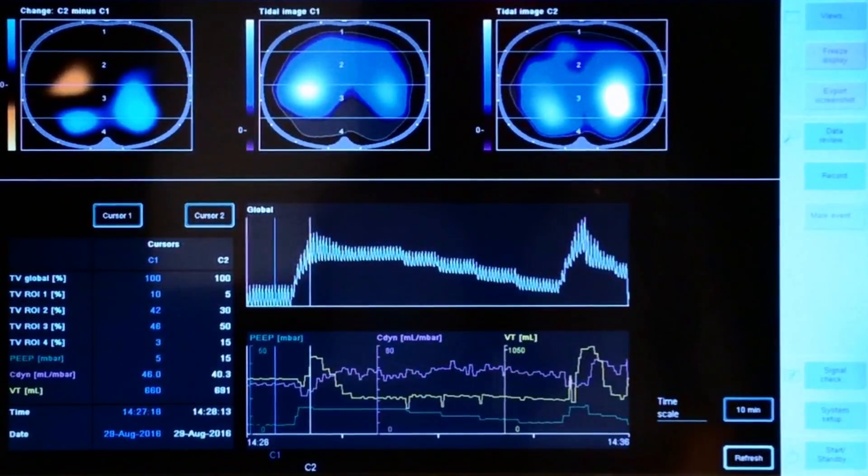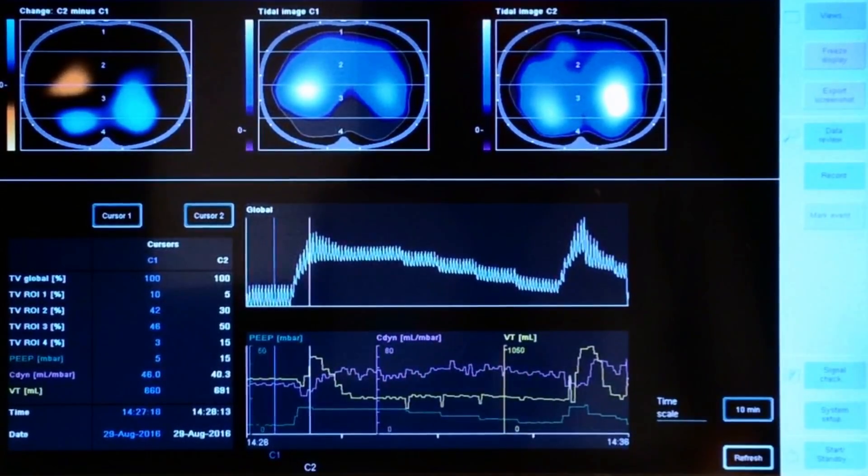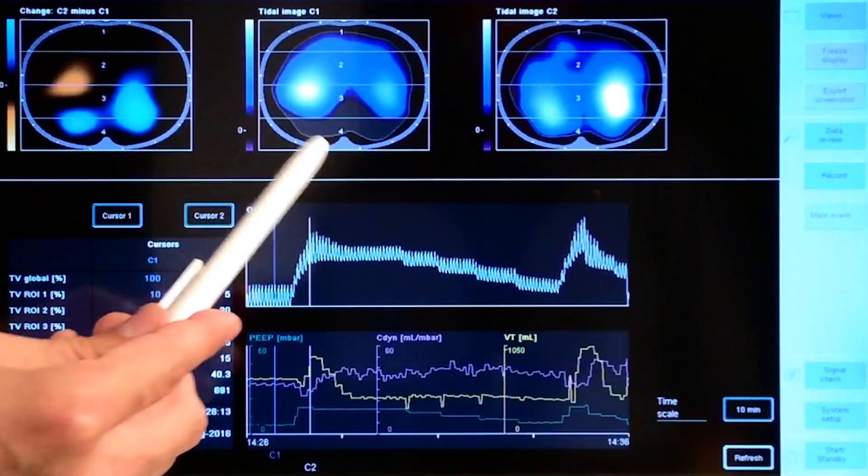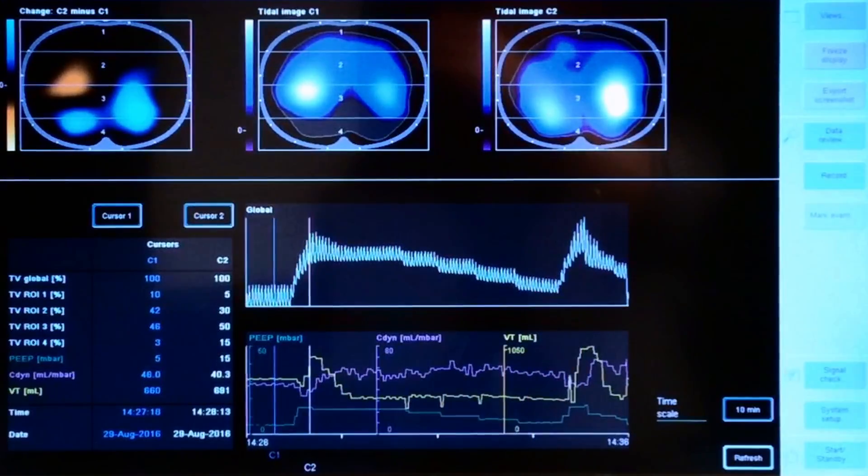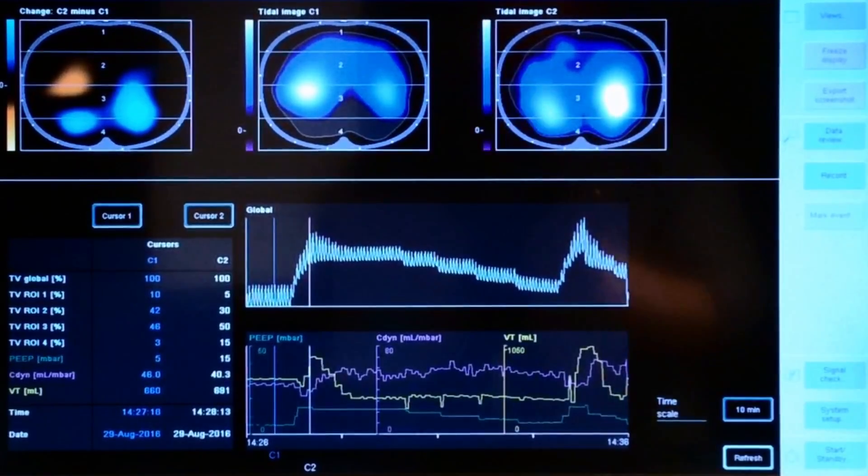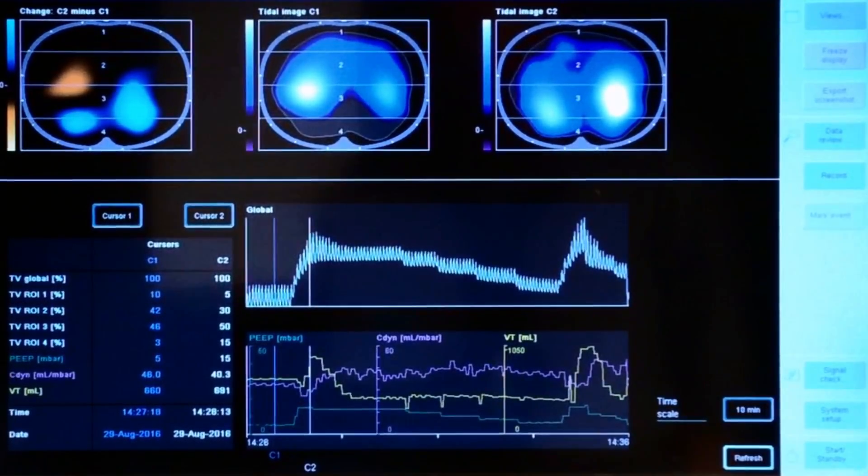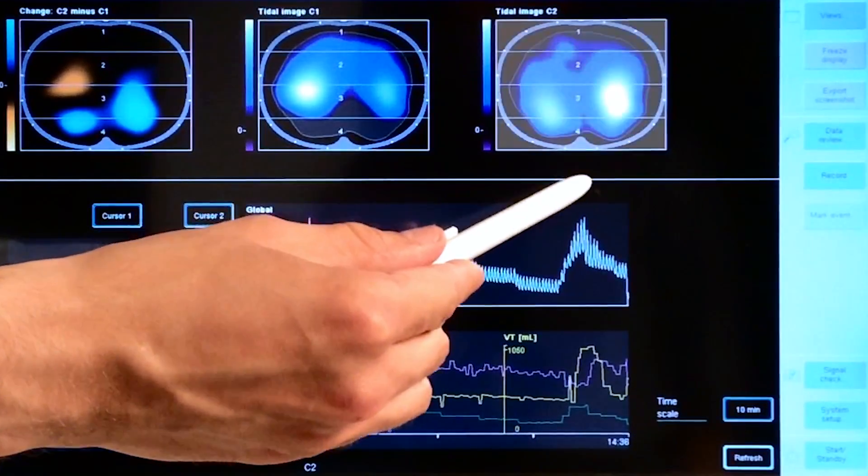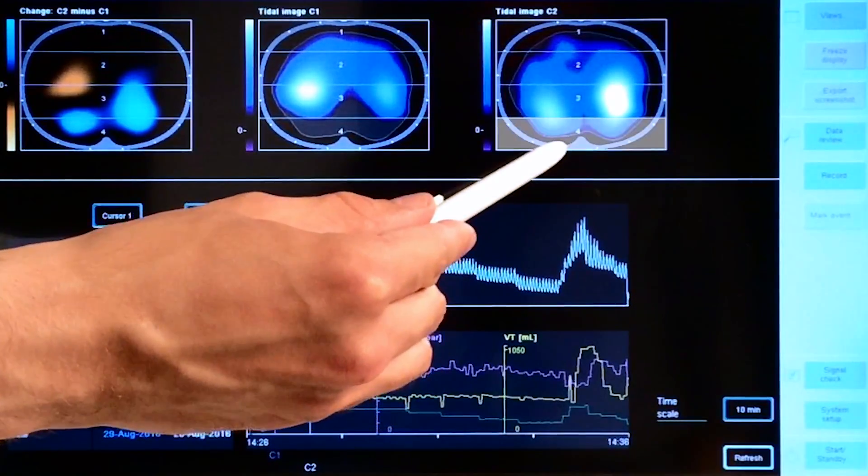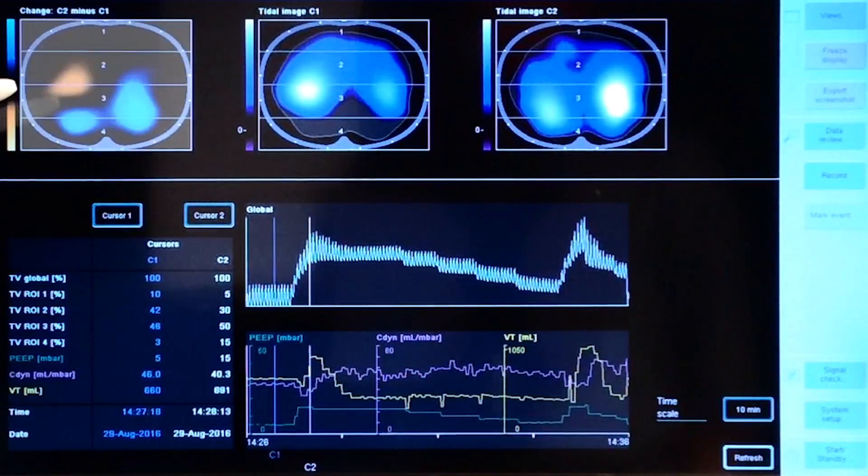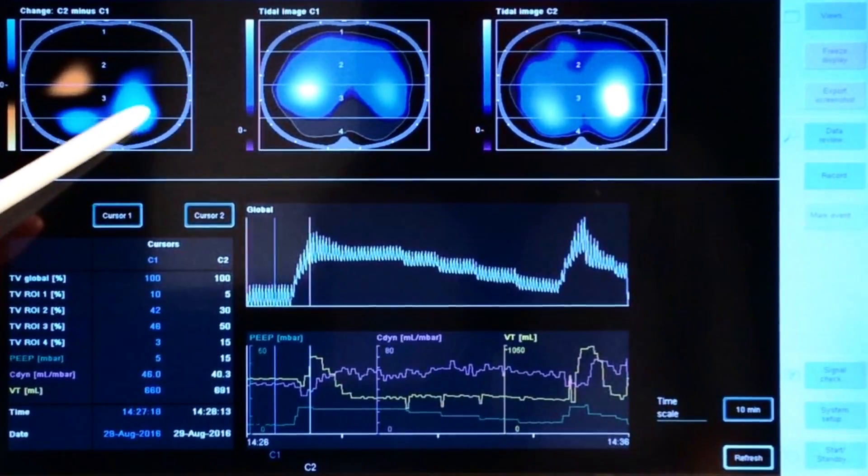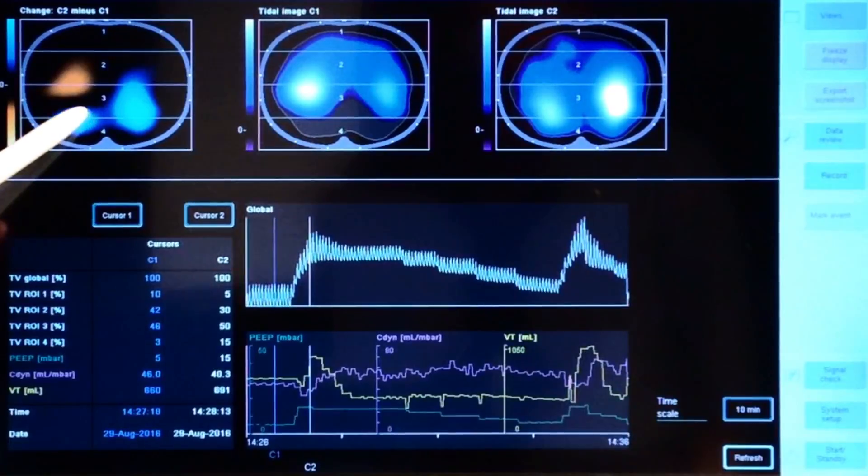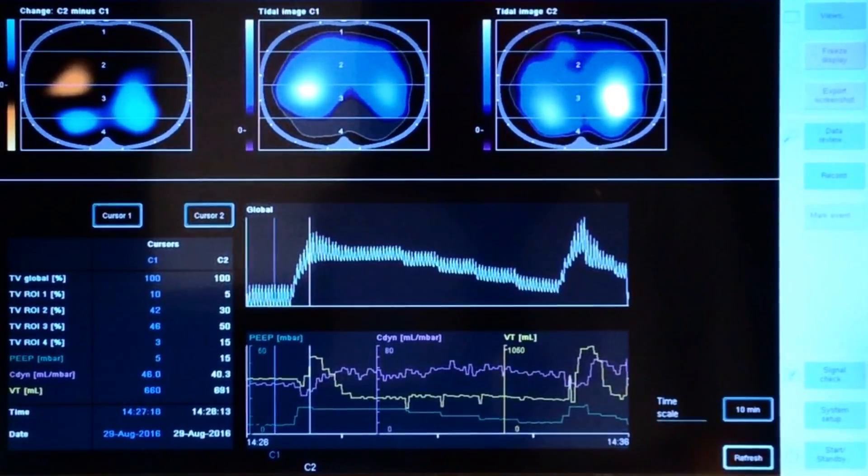When we compare the regional information before and during the recruitment maneuver, we see a significant change in the images. The title image now shows ventilation in region of interest number four. The differential image also shows blue color in this region, indicating a gain of ventilation.